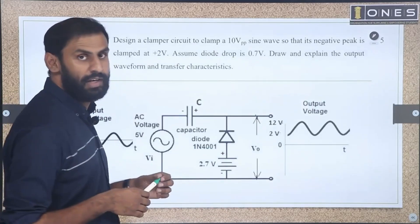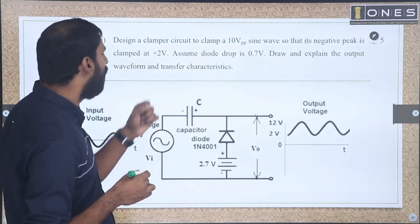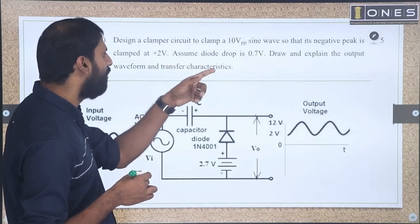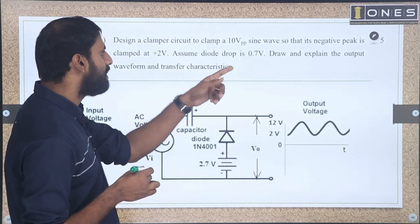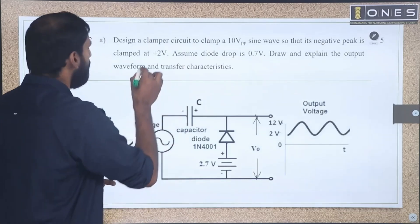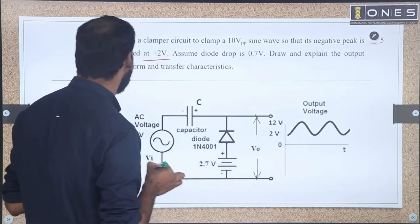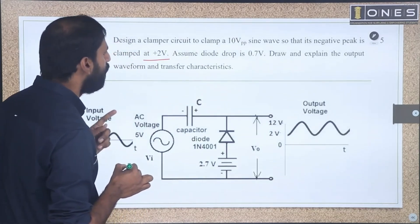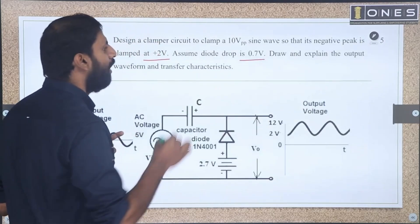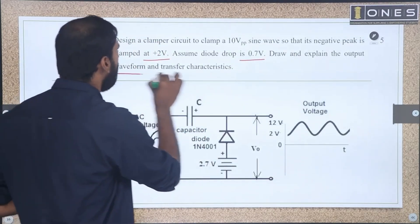In the second essay question: design a clamper circuit to clamp a 10 volt peak-to-peak sine wave so that its negative peak is clamped at 2 volt. Assume the diode drop is 0.7 volt. Draw and explain the output waveform and transfer characteristics.